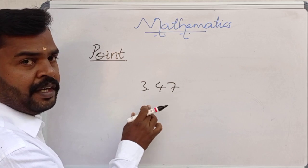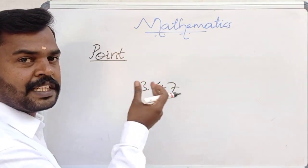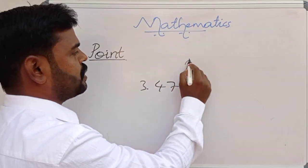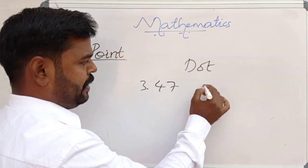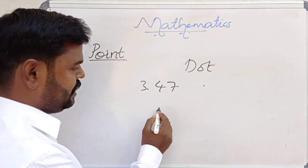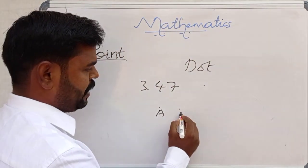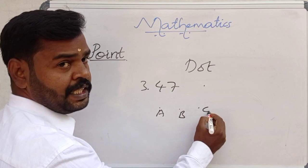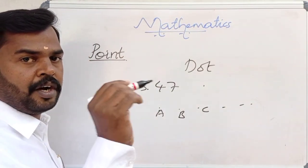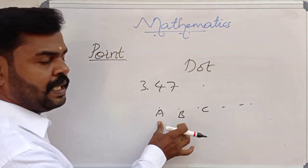Just suppose we see 3.47 — we say 'three point' — what is this point? There is no correct definition. We can just say a dot represents a point. Here point A, here point B, here point C, etc. A dot represents a point, and it is represented by capital letters.